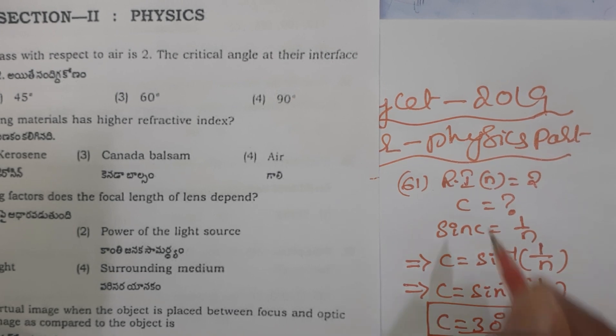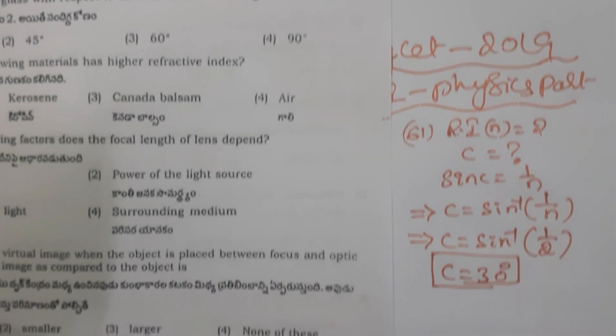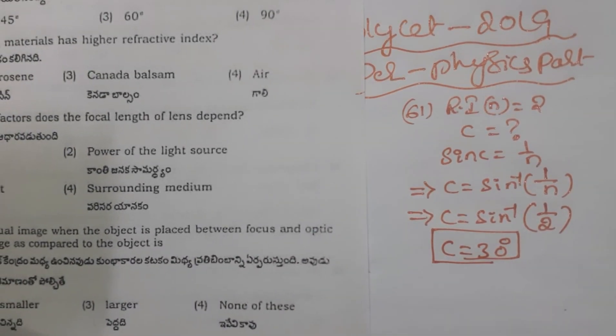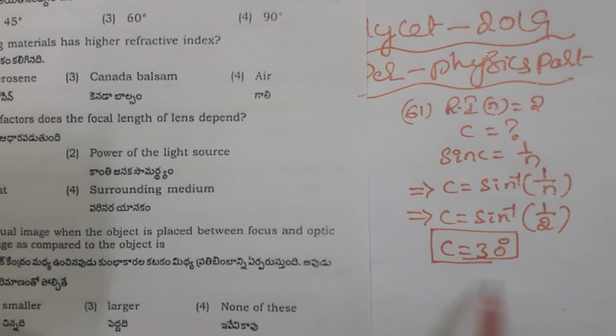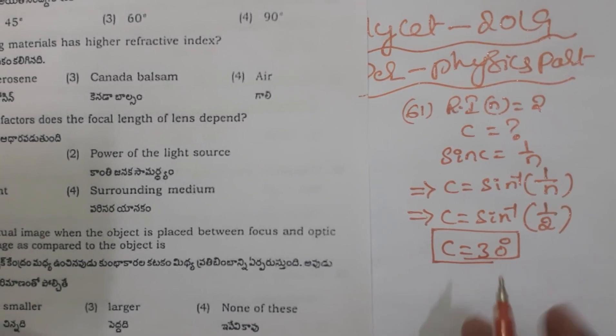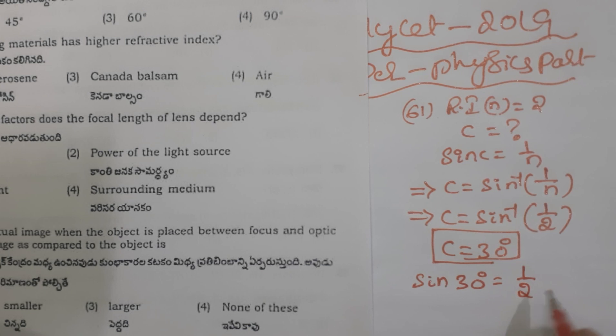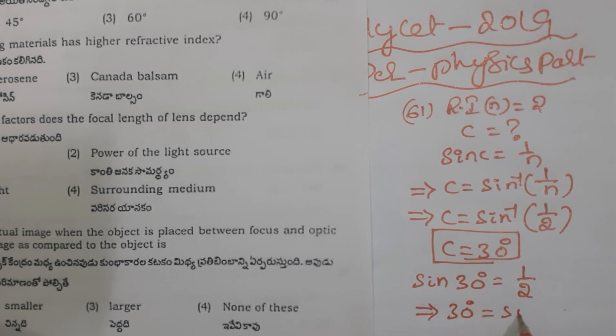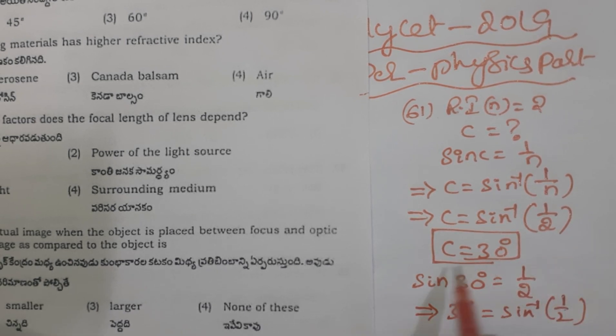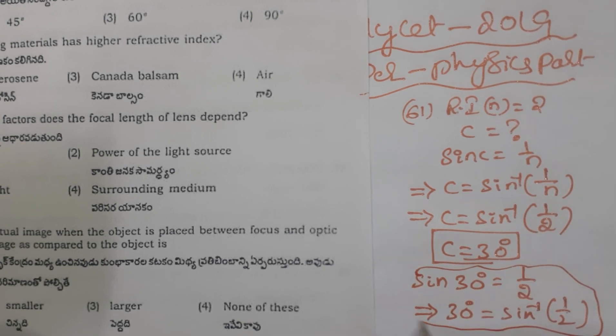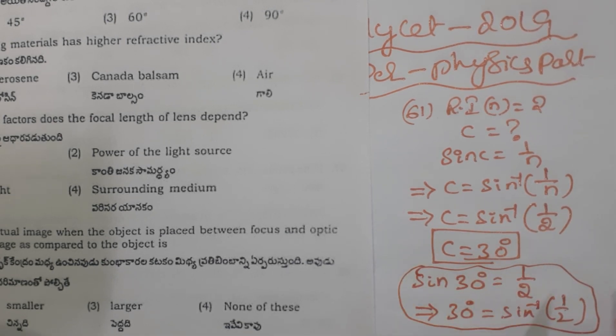But how is it 30 degrees? We know from mathematics and trigonometry that sin 30 degrees equals 1 by 2. Then this implies 30 degrees equals sin inverse of 1 by 2. So sin inverse of 1 by 2 equals 30 degrees. This is the clarification for this.